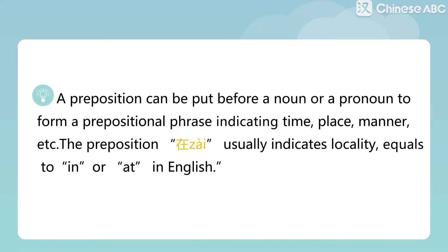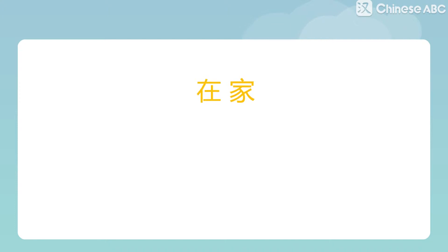A preposition can be put before a noun or a pronoun to form a prepositional phrase indicating time, place, manner, etc. The preposition 在 usually indicates locality, equal to 'in' or 'at' in English. 在家 means 'at home.'